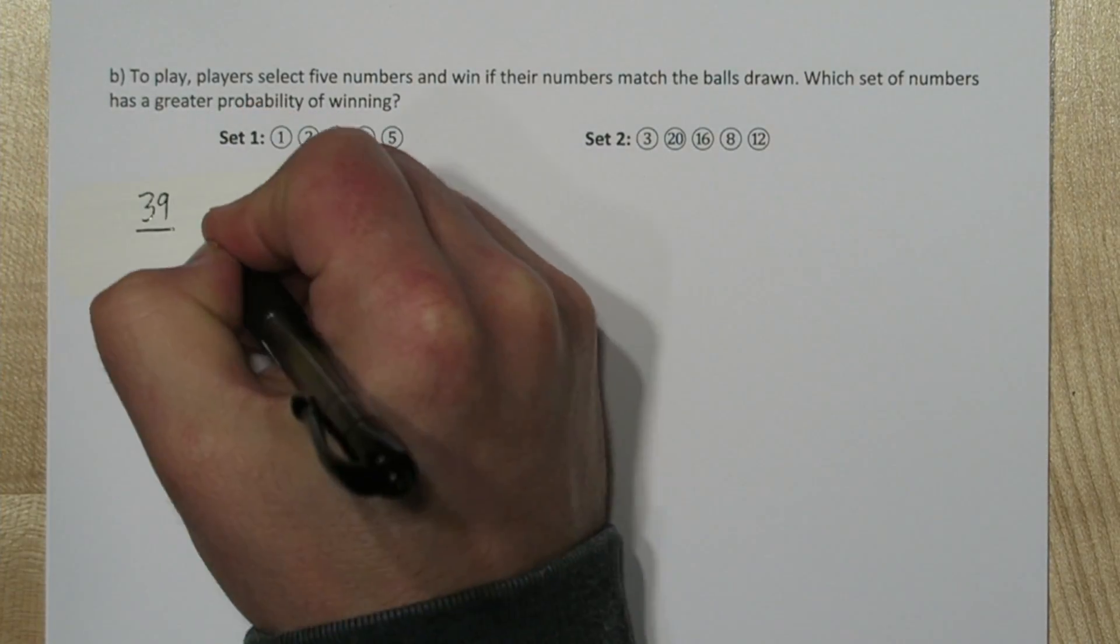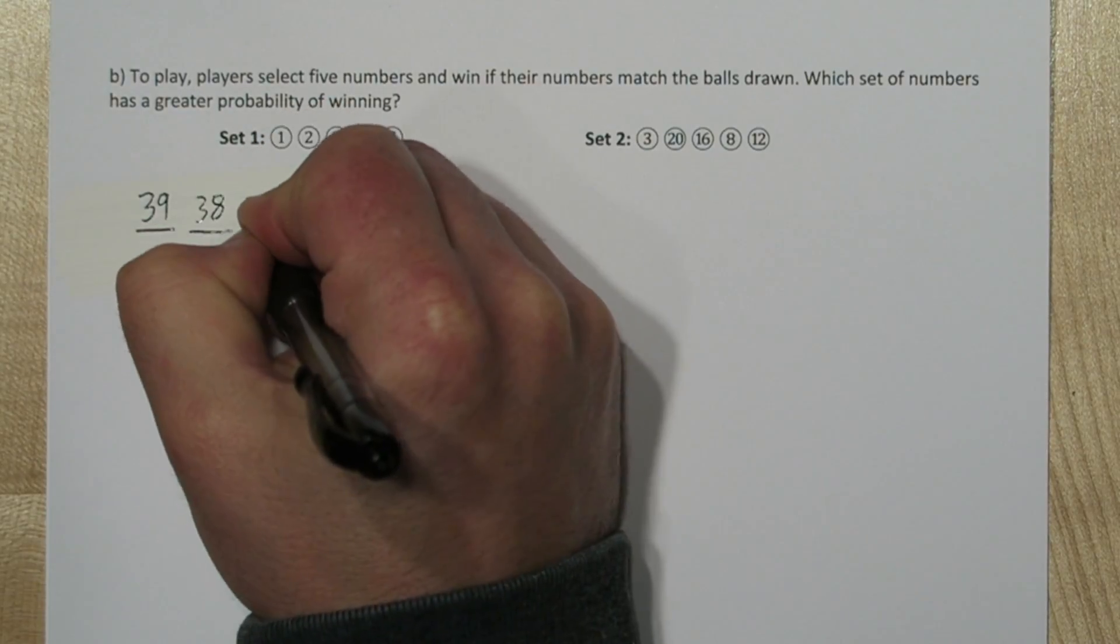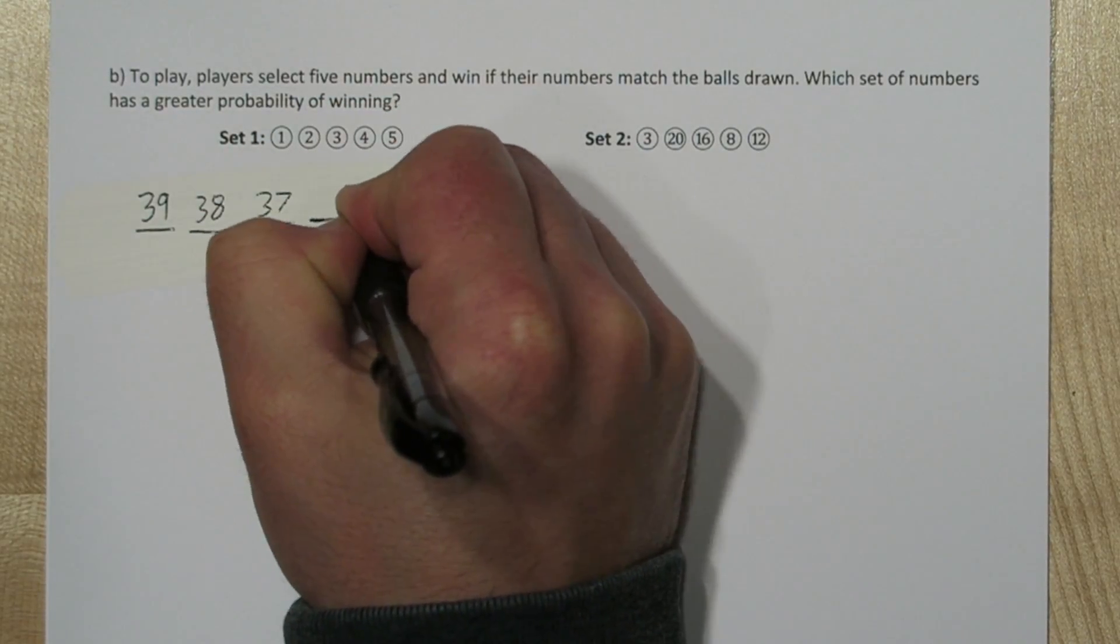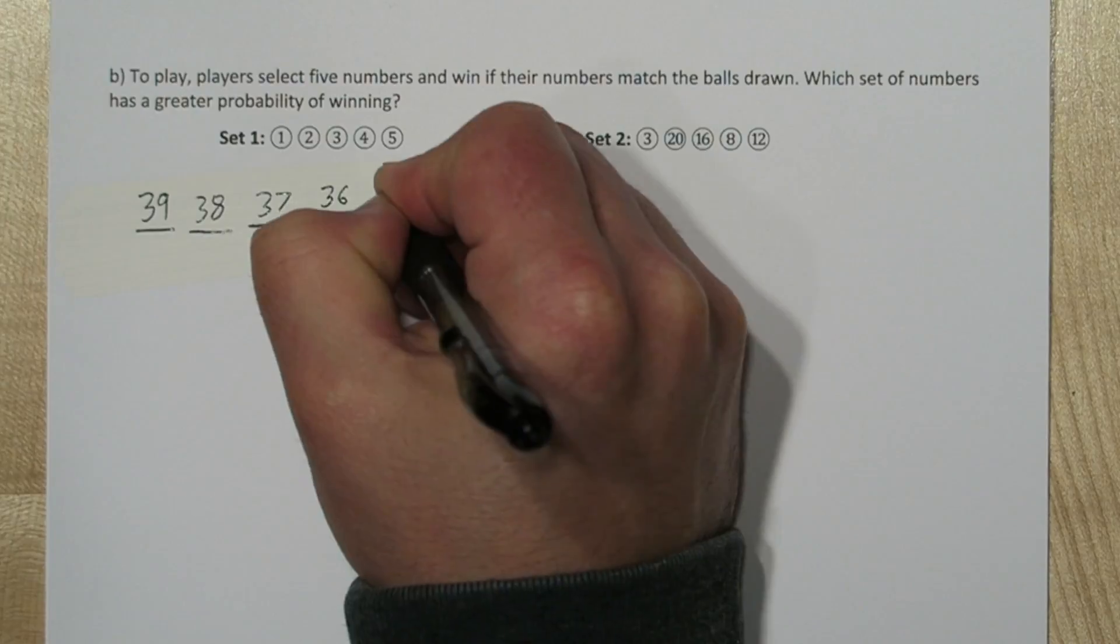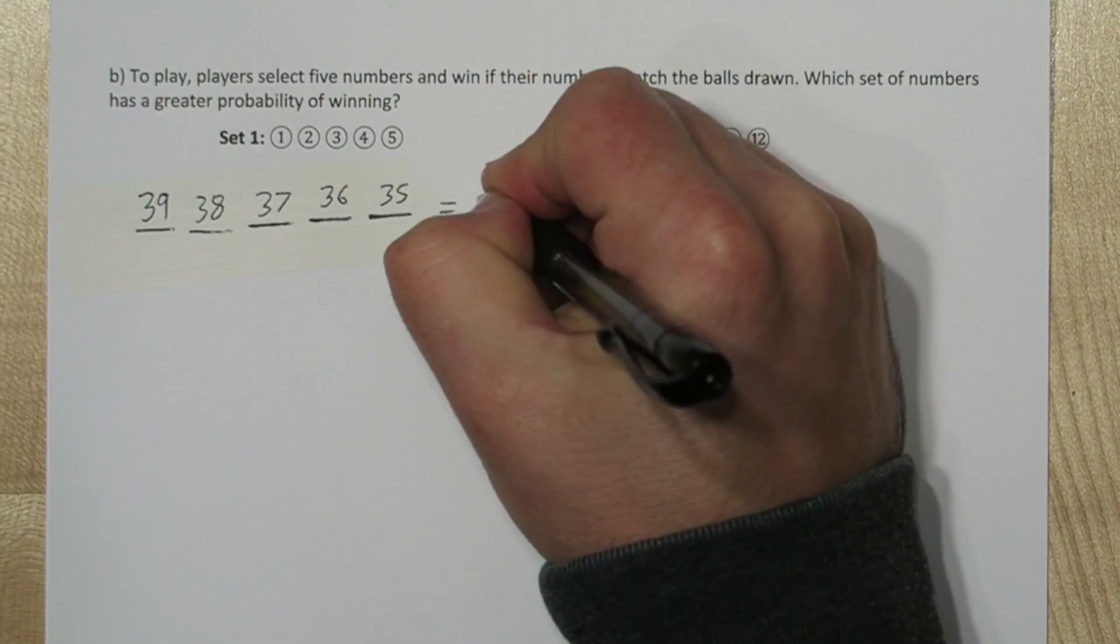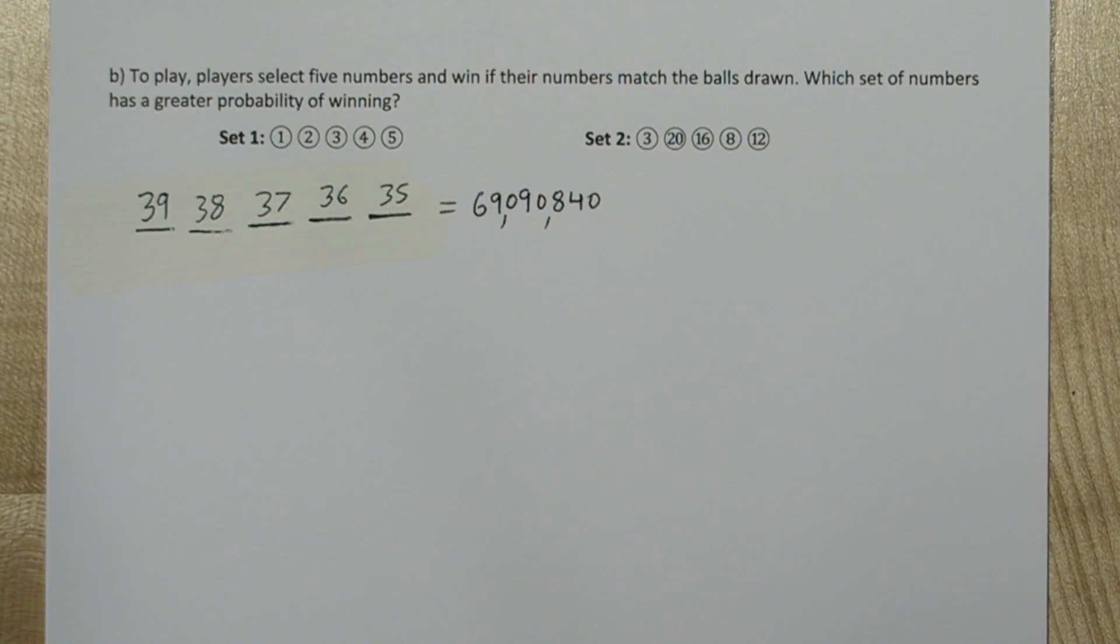When the first ball is drawn, there's 39 numbers it could be. Once that number is drawn, we're left with 38 numbers. Then 37, then 36, and then 35. So there's over 69 million unique ways to draw these numbers.